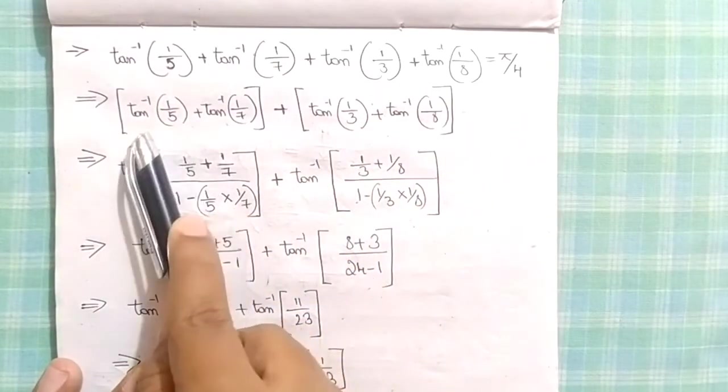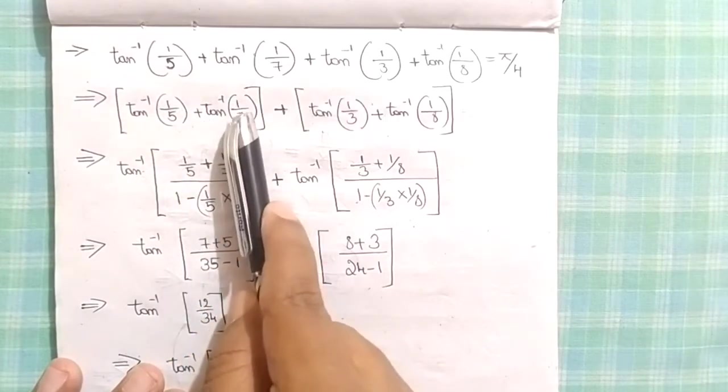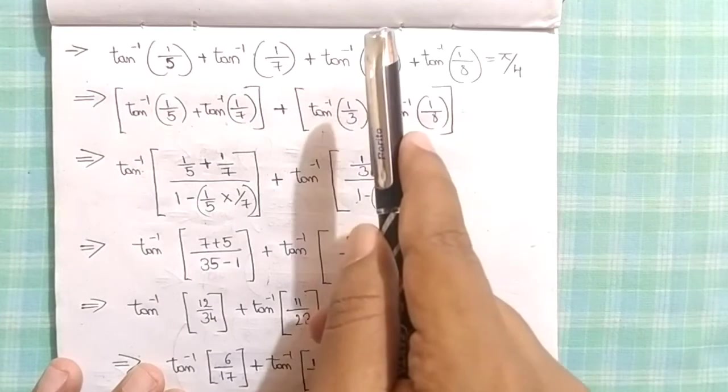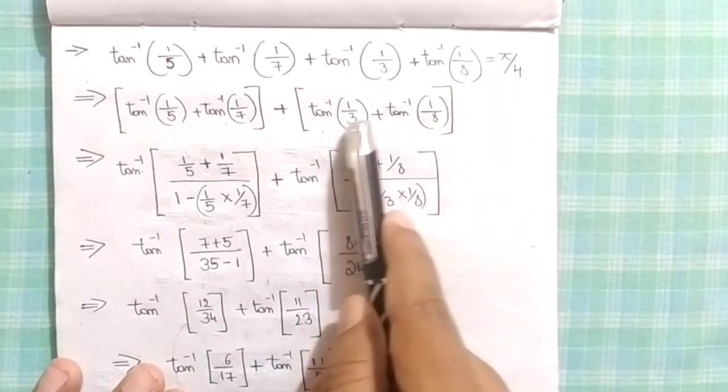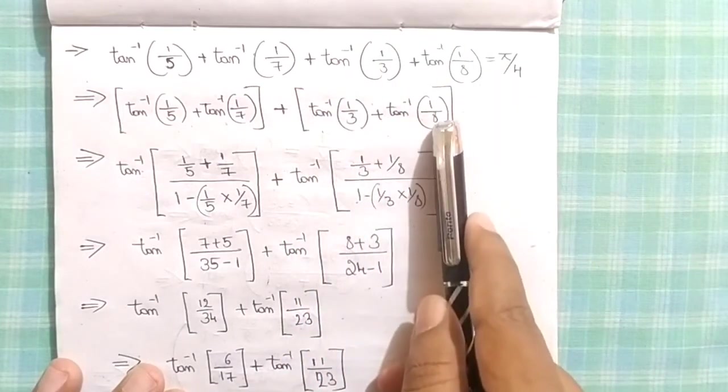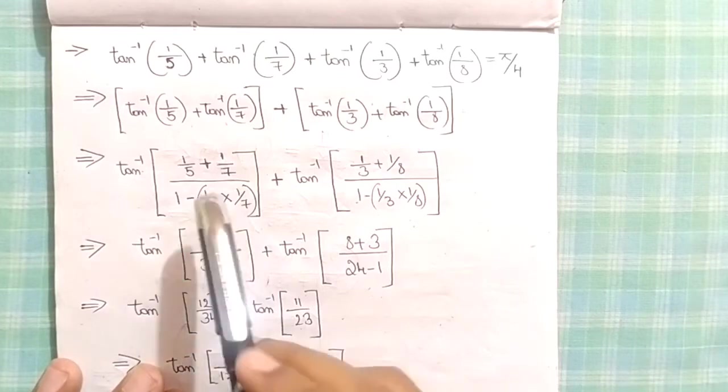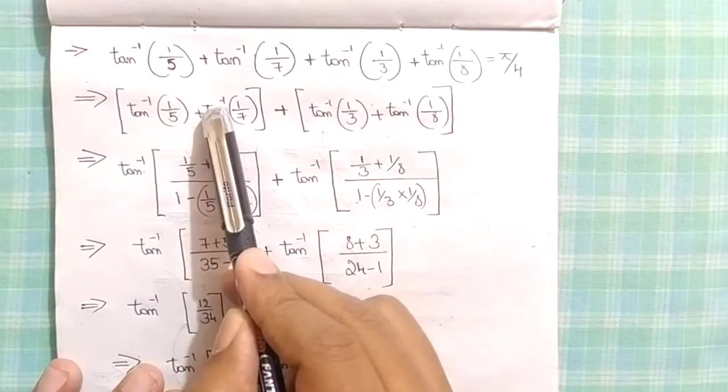Tan inverse of 1/5 plus tan inverse of 1/7 plus, and the second group is tan inverse of 1/3 plus tan inverse of 1/8. Now the second process: if you remember the tan inverse of x plus tan inverse of y formula, we can solve this first group with that formula.